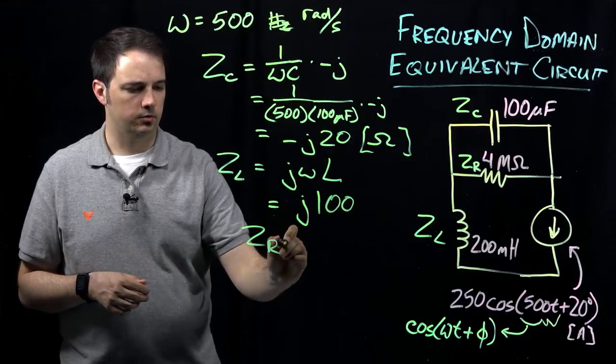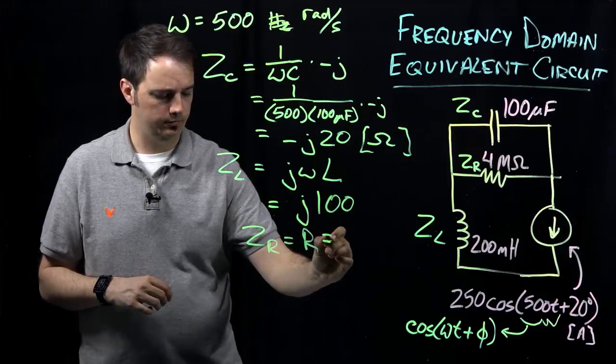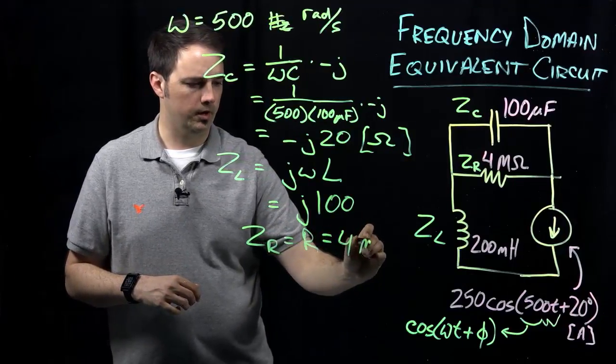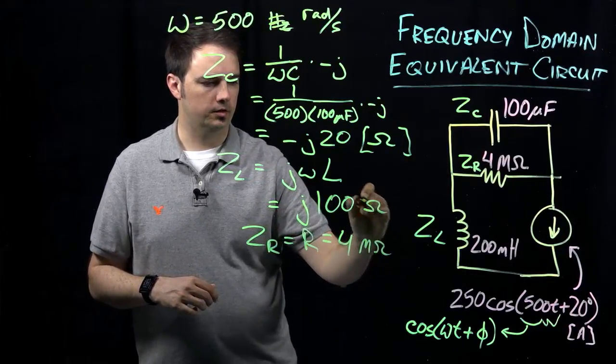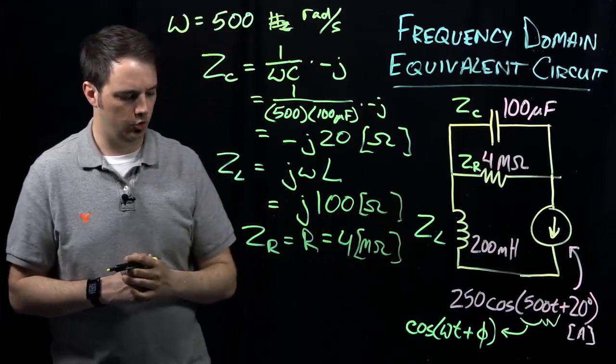And then, of course, for the impedance of my resistor, well, this is just always equal to the resistance value itself, which in this case is 4 mega ohms. Should indicate the impedance here for my inductor also in terms of ohms.